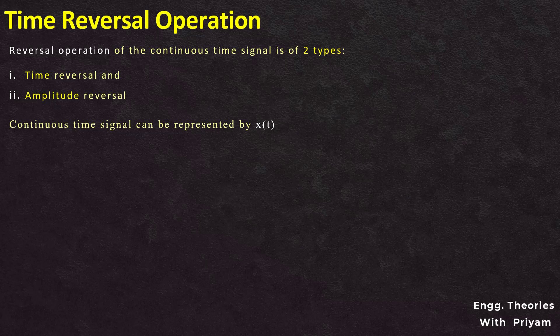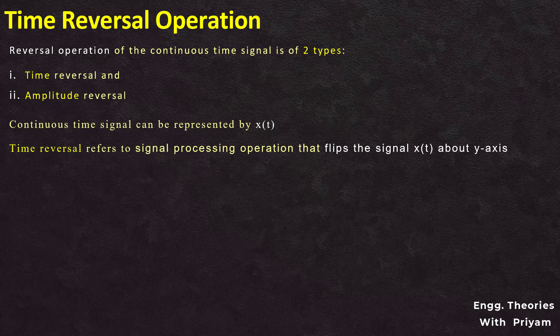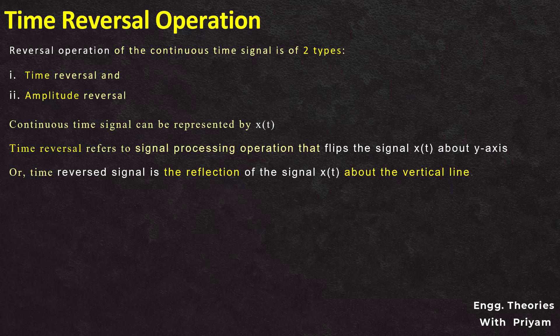The time reversal operation of the continuous time signal is a signal processing operation that flips the signal x(t) about the y-axis. The time-reversed signal is the reflection of the signal x(t) about the vertical line. In this operation the independent variable t is replaced by minus t, and this is also known as the folding operation of the signal x(t).